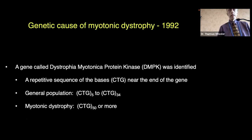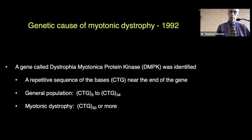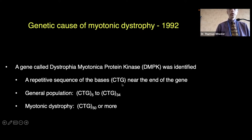In 1992, the genetic cause of myotonic dystrophy was reported. It was found to be in a gene named dystrophia myotonica protein kinase. The difference between myotonic dystrophy and the general population was a repetitive sequence of CTG bases near the end of the gene. The general population has between 5 and 34 repeats; myotonic dystrophy was reported as having more than 50 repeats.